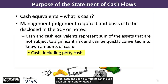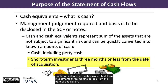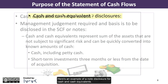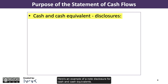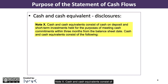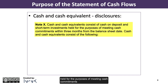Thus, cash and cash equivalents can include cash on hand and on deposit in financial institutions, as well as petty cash. Cash equivalents generally include short-term investments three months or less from the date of acquisition. Here is an example of a note disclosure for cash and cash equivalents. Note X: cash and cash equivalents consist of cash on deposit and short-term investments held for the purposes of meeting cash commitments within three months from the balance sheet date.